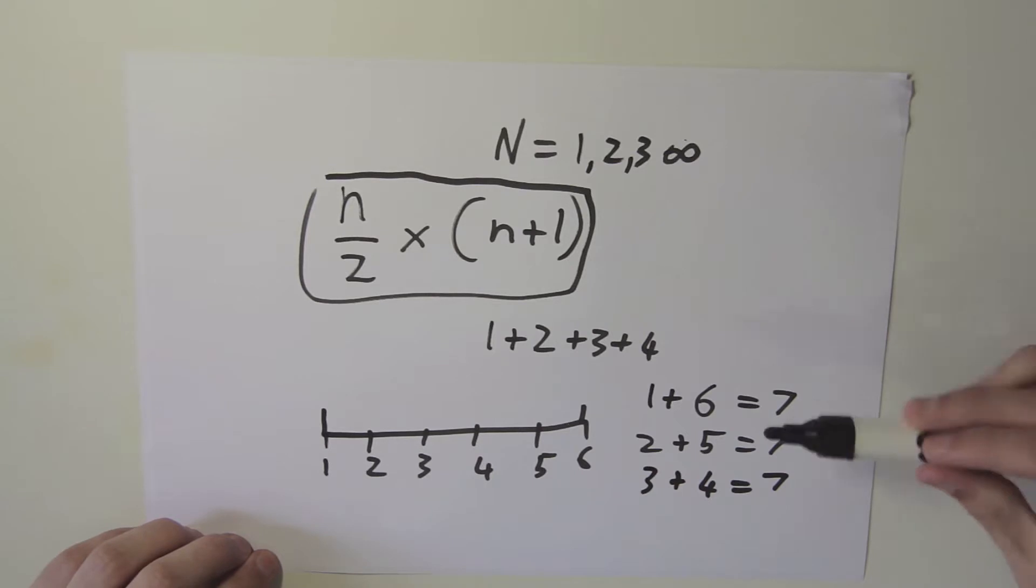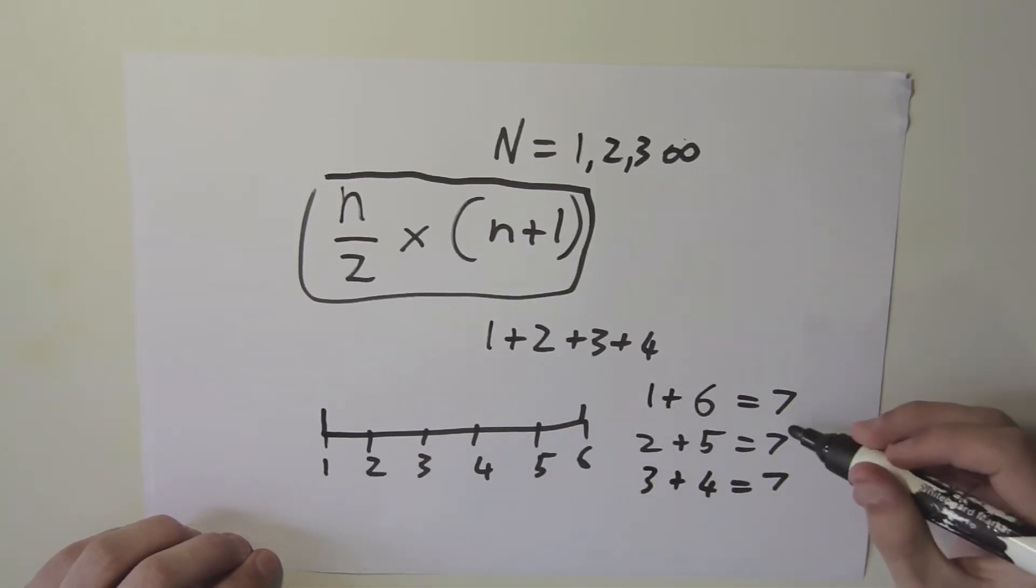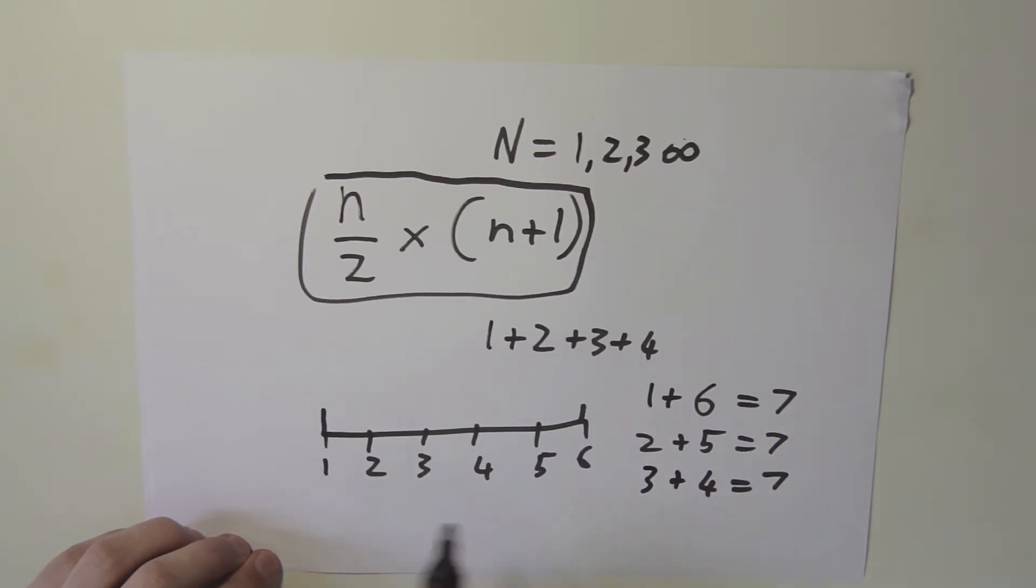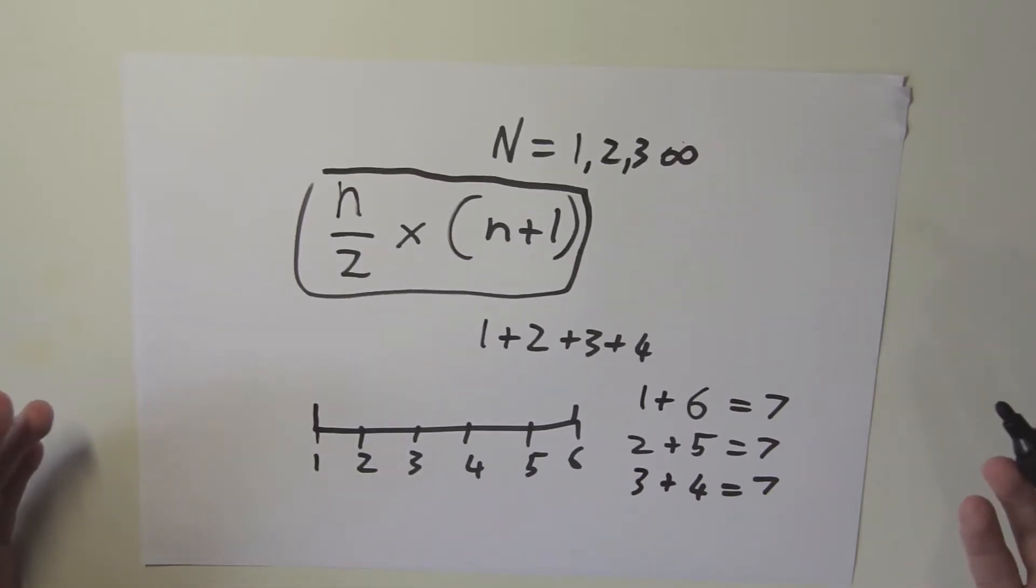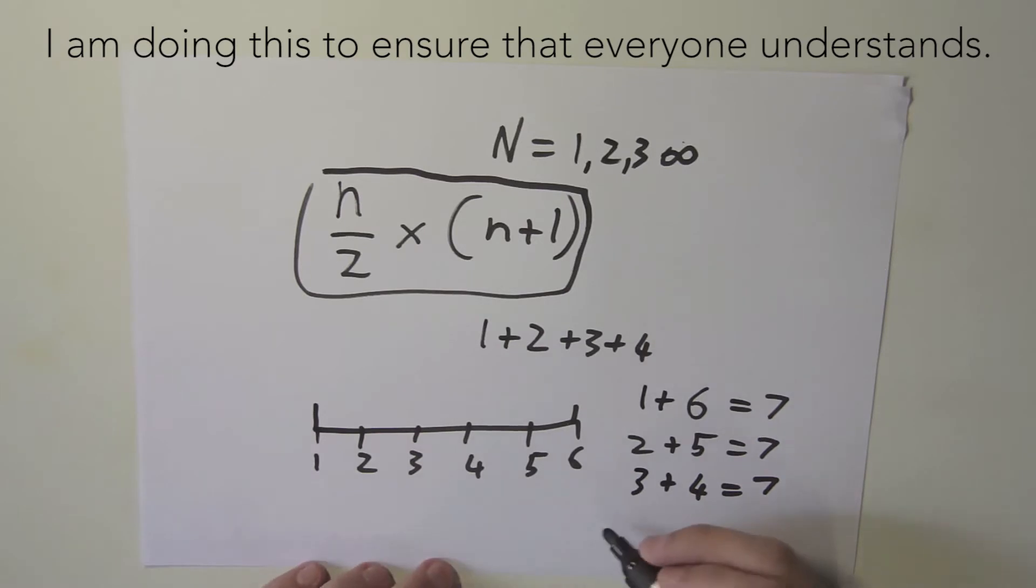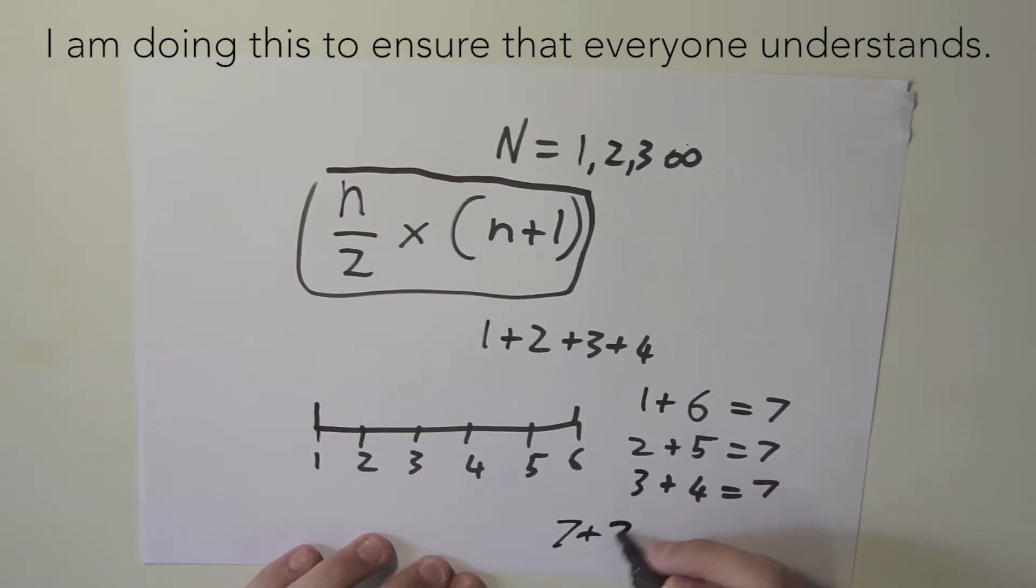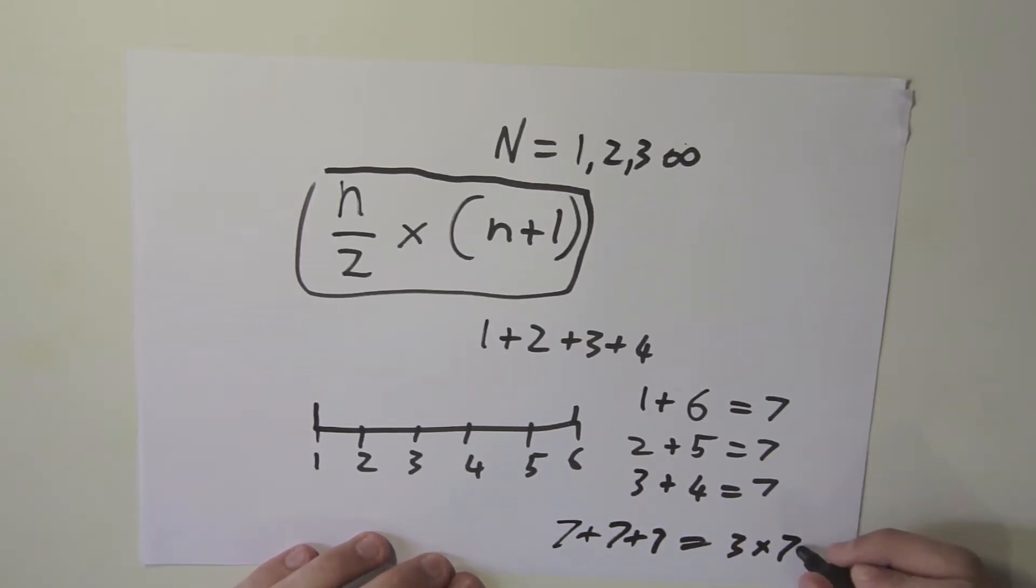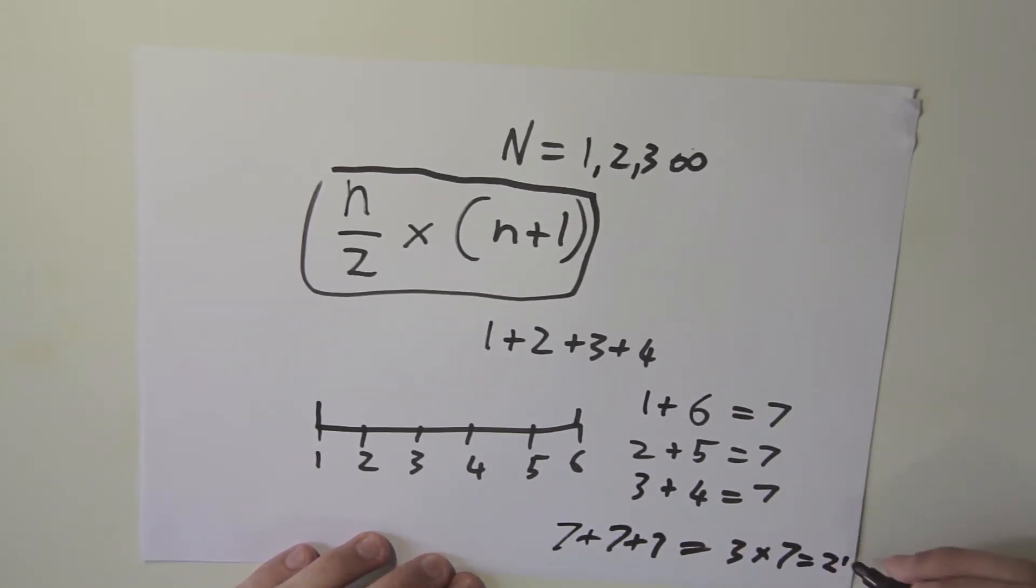So as you can see, we have three groups that all net to 7. Due to the fact that we are just adding the numbers together, if we add all these 7s together, we will get the sum of all numbers from 1 to 6. So 1 plus 2 plus 3 plus 4 plus 5 plus 6 will give us 7 plus 7 plus 7. We don't need to actually say 7 plus 7 plus 7 because what is repeated addition? It is multiplication. It's basically 7 plus 7 plus 7 equals 3 times 7. So what is 3 times 7? It's obviously 21.